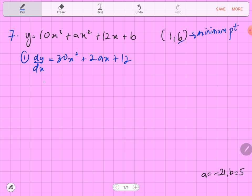When dy/dx equal to 0, means that 30x square plus 2ax plus 12 equal to 0. We want to find the minimum or maximum point. We have to equate dy/dx with 0.